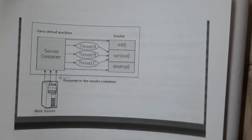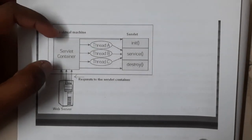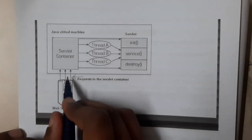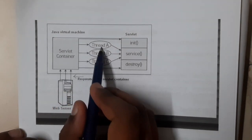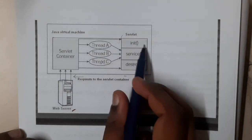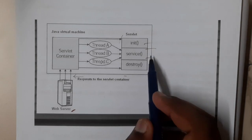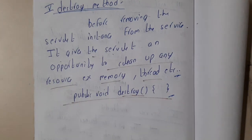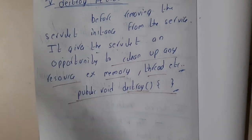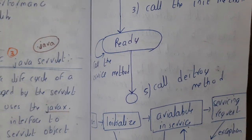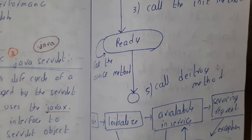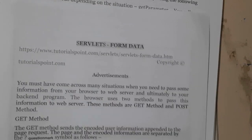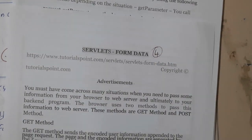For a small architecture diagram: inside the JVM you have the servlet container. The server sends requests, threads are created based on those requests, and these threads interact through the three methods — initialization, service, and destroy. This is the architecture of the servlet lifecycle. We hope everyone got a basic idea about it. In the next lecture we will go through some examples to make it clearer.